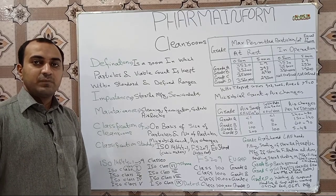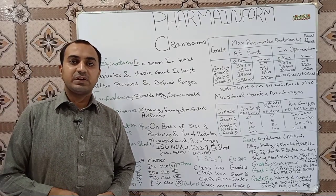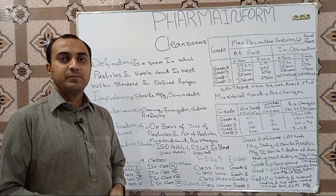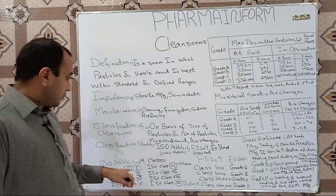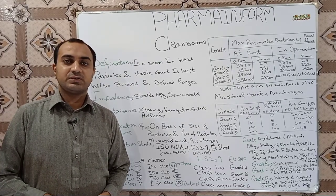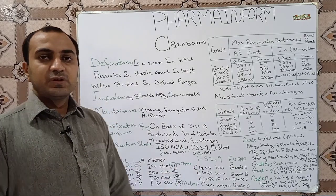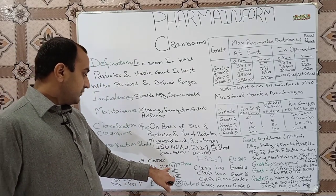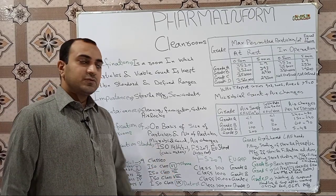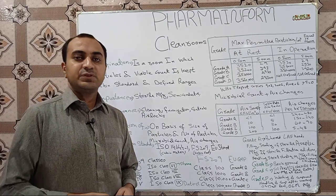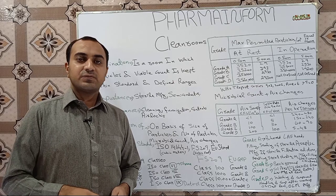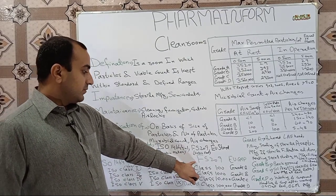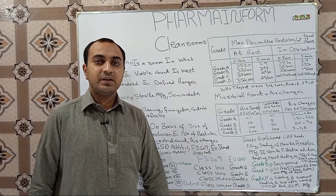In pharmaceutical industries we do not use ISO Classes 1, 2, 3, or 4. These areas are used for the manufacturing of very sensitive electronic components like semiconductors, where the presence of dust or dirt may affect their working. In pharmaceutical industries, clean rooms start from ISO Class 5 through ISO Class 8 — meaning we use four classes: ISO Class 5, 6, 7, and 8.